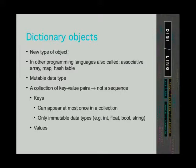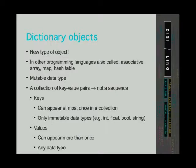The immutable data types that we mentioned are integers, floats, booleans and strings. Values, on the other hand, can appear more than once in a dictionary, and they can be of any data type.